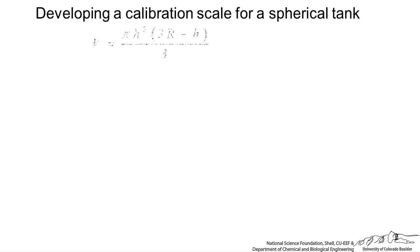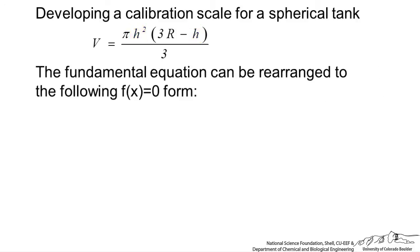We can start this by developing equations. Volume of liquid in the tank is given by this formula where R is the radius of the spherical tank and height is just the depth from the bottom. The fundamental equation can be rearranged to the following f(x) equals zero form. What we're trying to do is provide V and we're trying to calculate the height at which that volume would occupy in the tank.